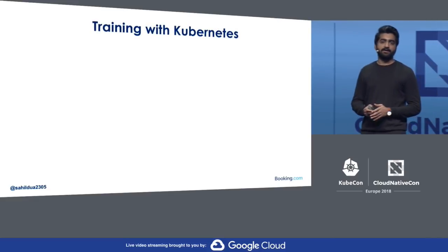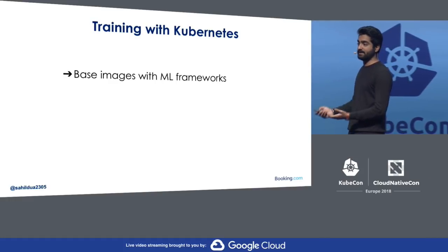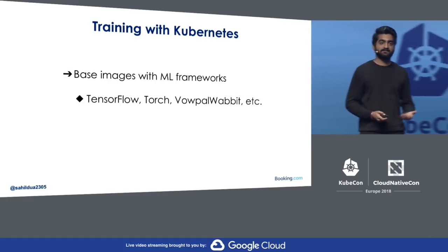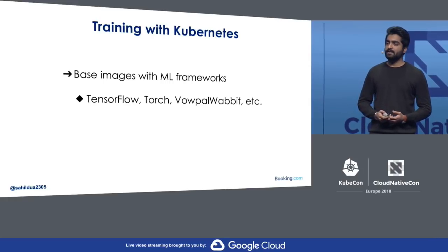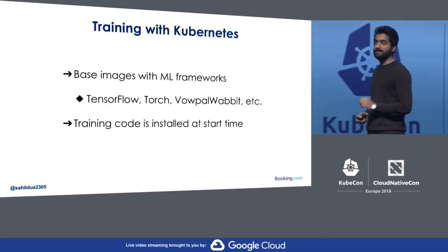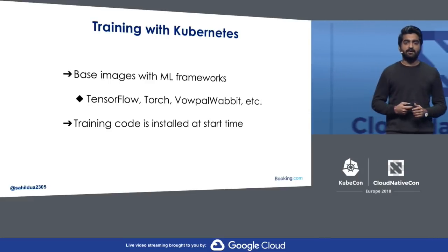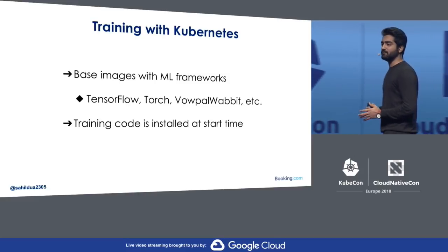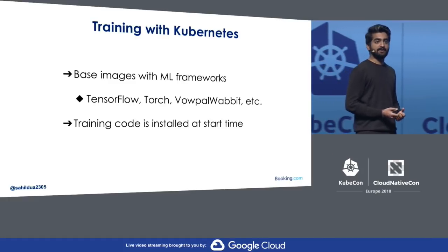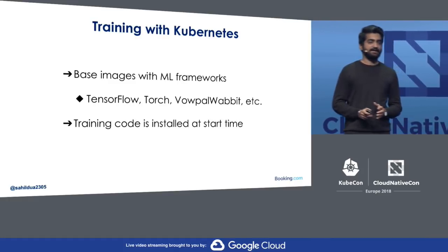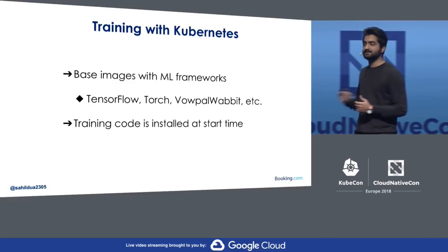Let's see how we do our training with Kubernetes. The first thing to note is we have our base images with all the machine learning frameworks we think are going to be used — normally TensorFlow, Torch, VowpalWabbit, and a bunch of other frameworks that data scientists use to write their models. Importantly, we don't put any training code in the image. This makes it easy to iterate during development — we don't have to go through a workflow of making a change, building an image, putting it into the registry, and running a container.